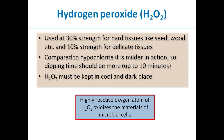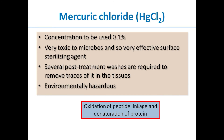Hydrogen peroxide is used at 30% strength for hard tissues like seed and wood, and at 10% strength for delicate tissues. Compared to hypochlorite it is milder in action, so dipping time can be up to 10 minutes. Hydrogen peroxide must be kept in a cool and dark place. It has a highly reactive oxygen atom that oxidizes the materials of microbial cells, killing them instantly.